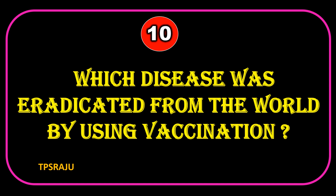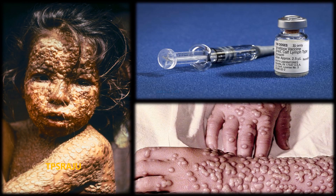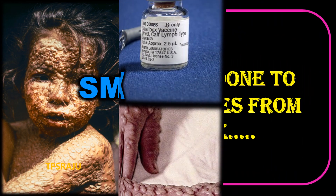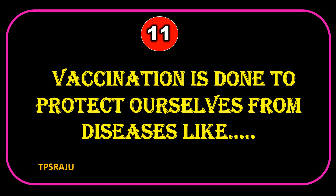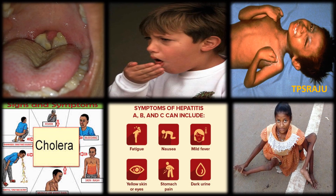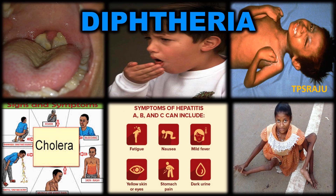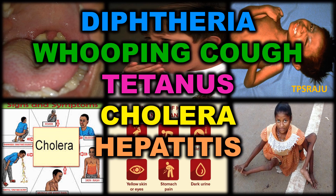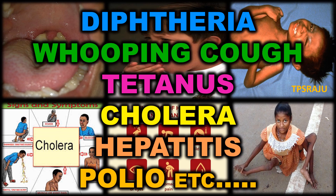Which disease was eradicated from the world by using vaccination? Smallpox. Vaccination is done to protect ourselves from diseases like diphtheria, whooping cough, tetanus, cholera, hepatitis, polio, etc.